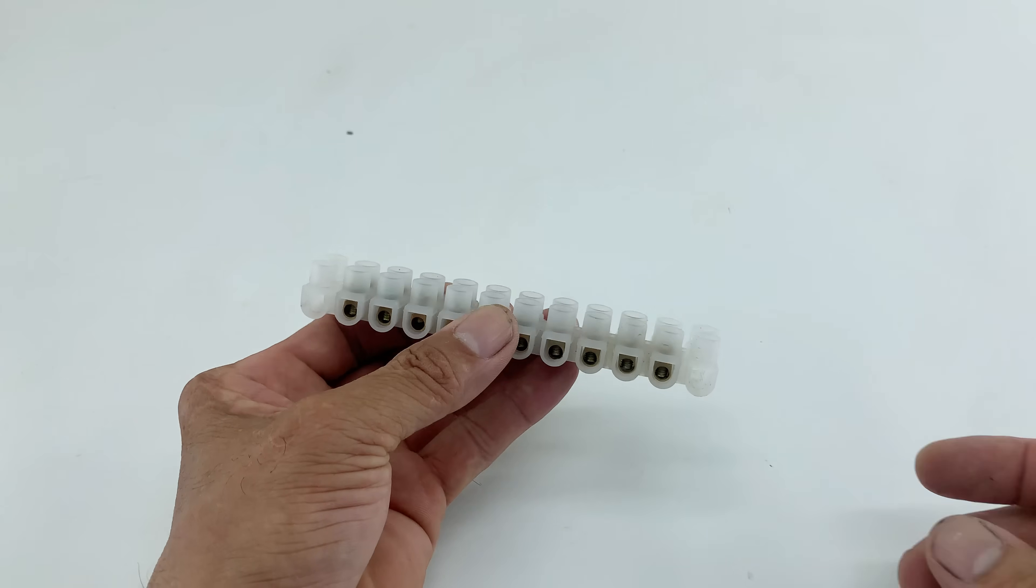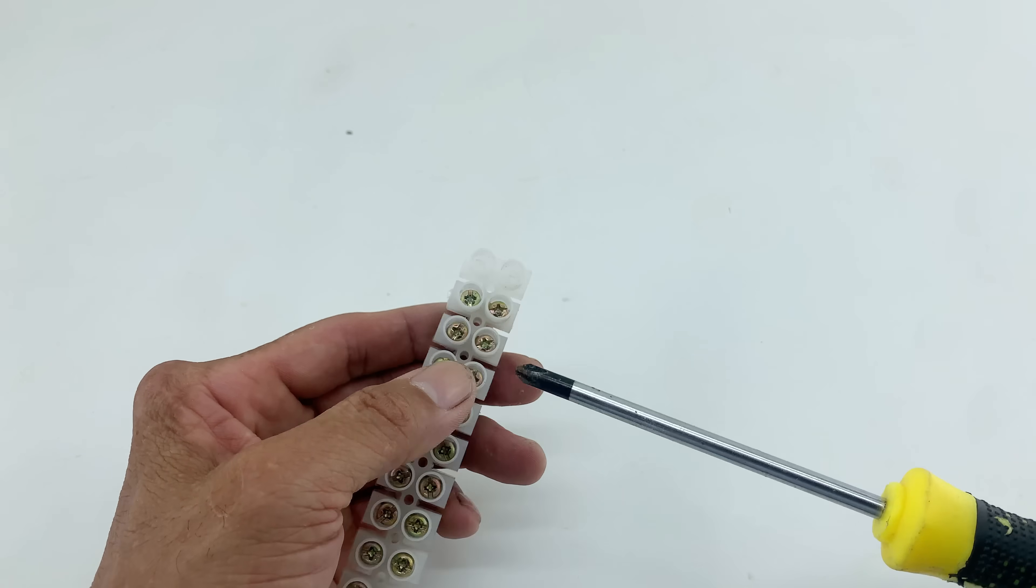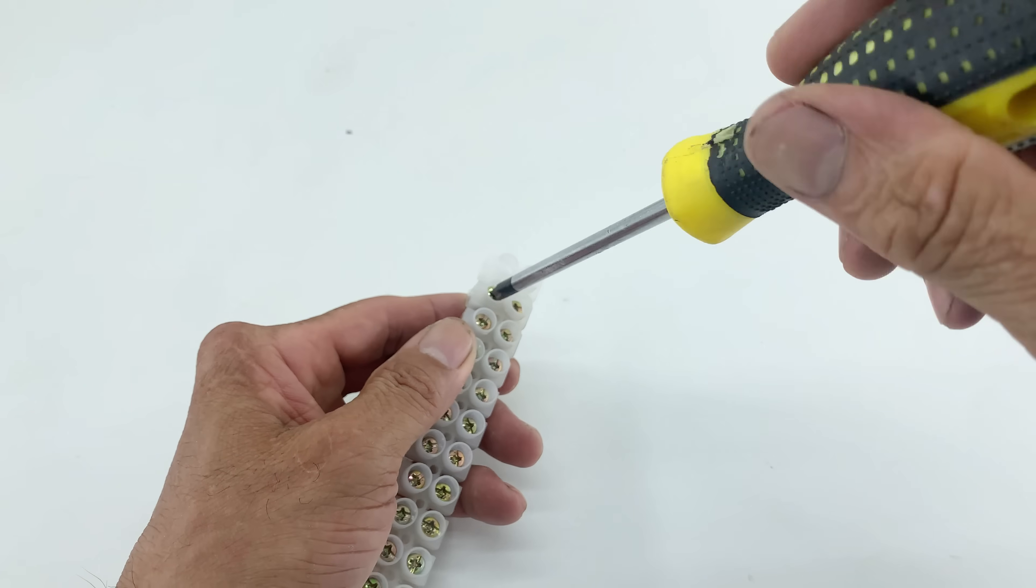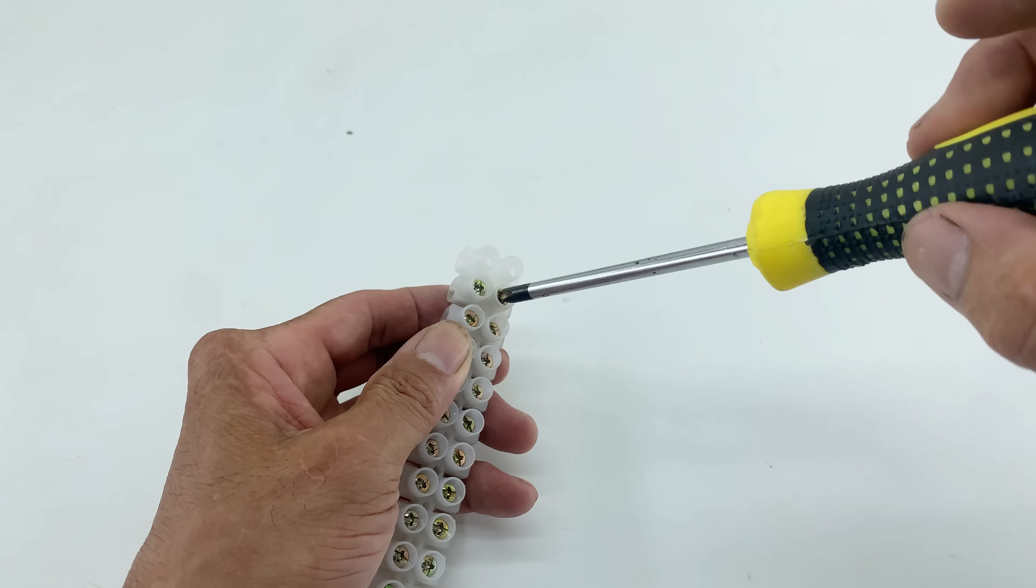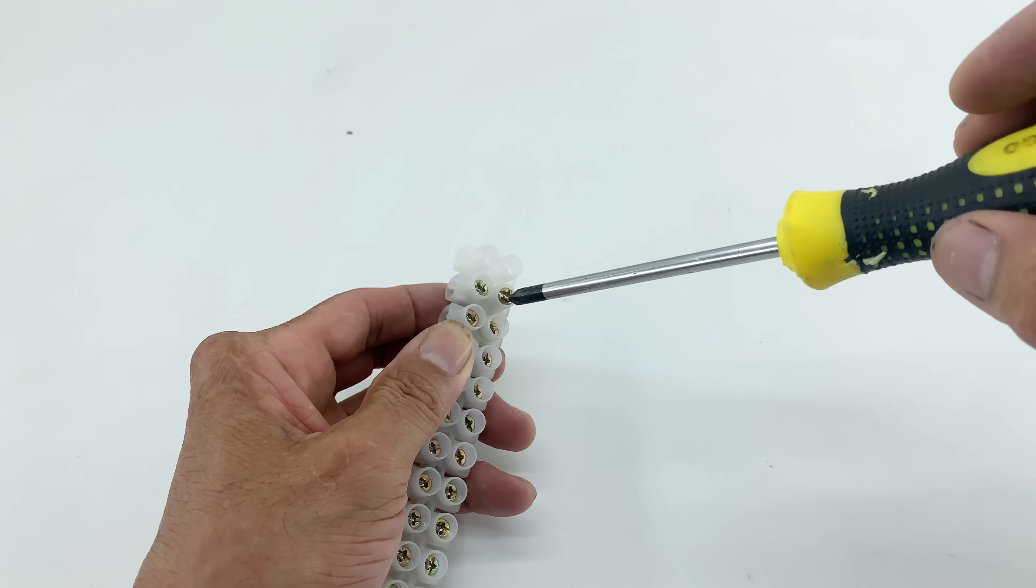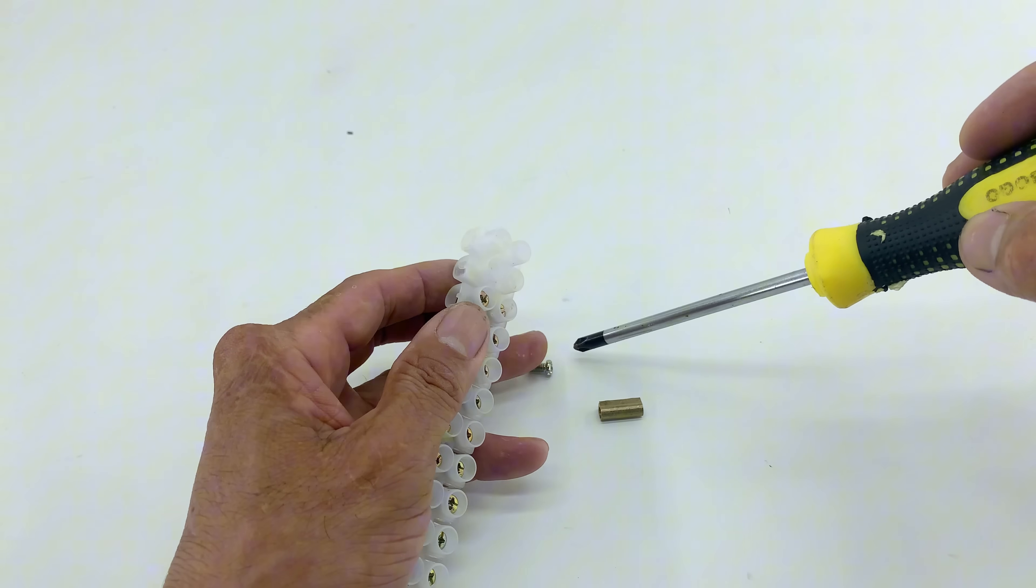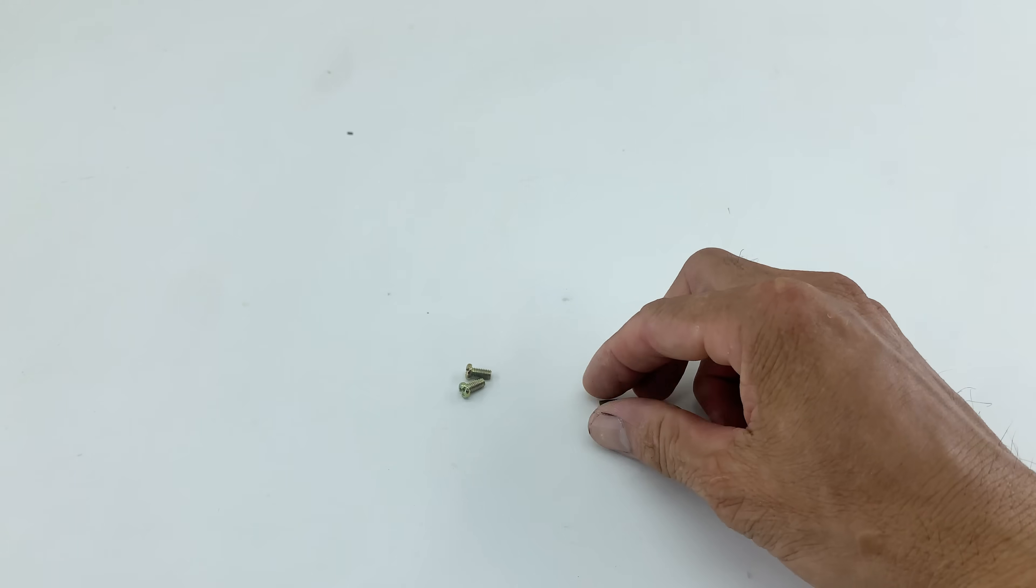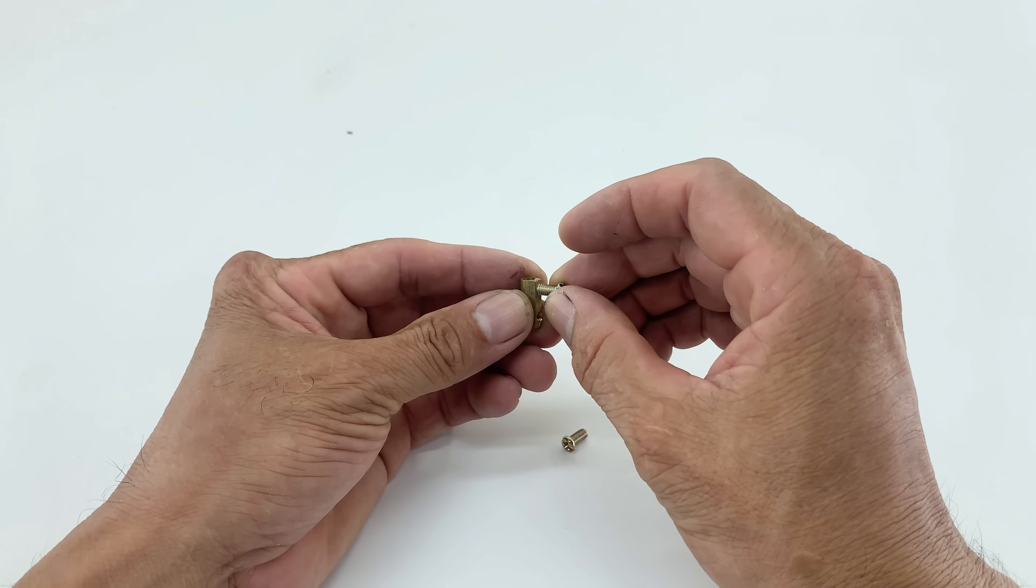Next, I'm grabbing a terminal block. I remove an individual brass terminal from a terminal block by unscrewing their retaining screws using a screwdriver. This terminal is designed for secure wire connections. This small piece is perfect for creating a secure attachment point. I'll take two small screws and connect them together to make a small, sturdy terminal.